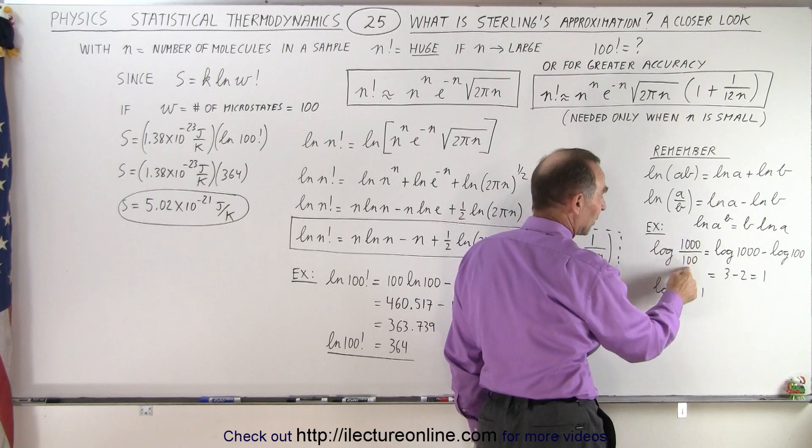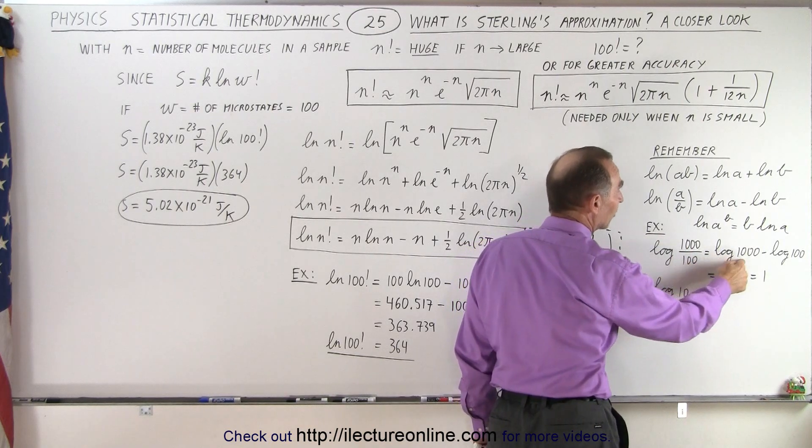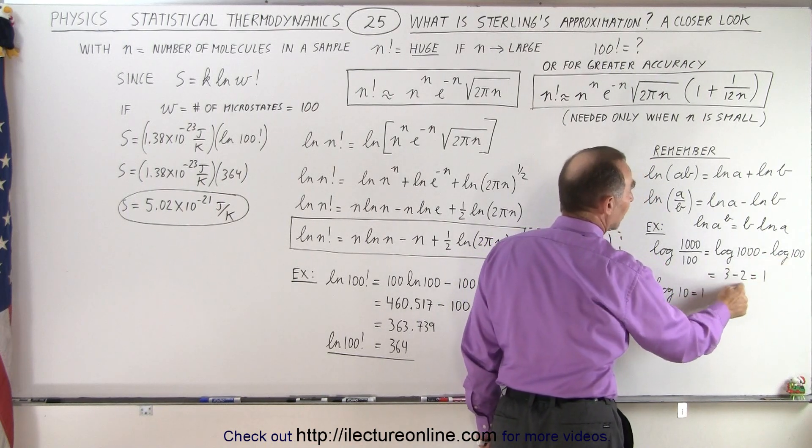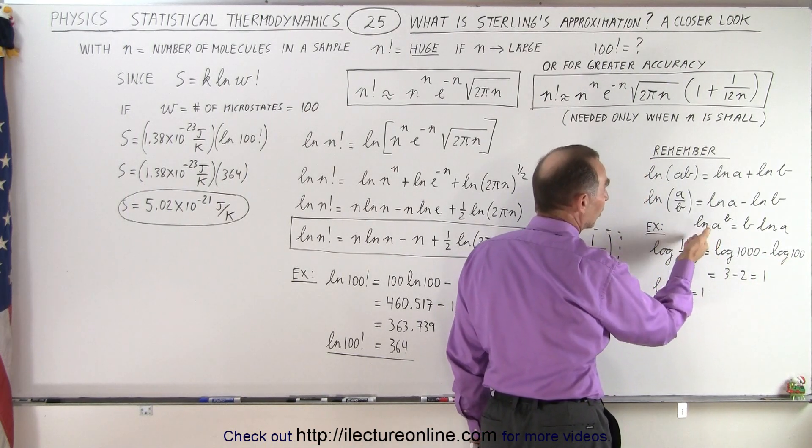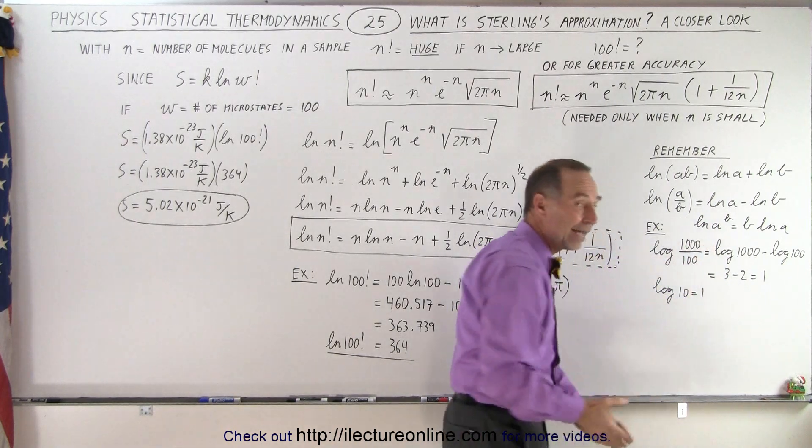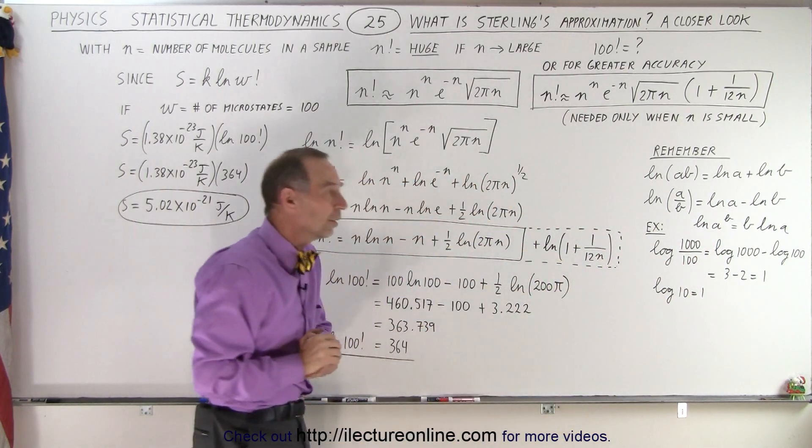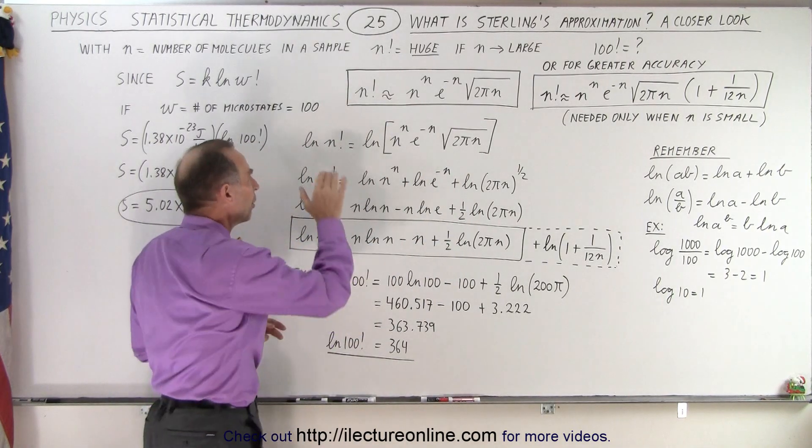The log of 1000 divided by 100 is equal to the log of 1000 minus the log of 100. The log of 1000 is 3, the log of 100 is 2. 3 minus 2 is 1, and of course 1000 divided by 100 is 10 and the log of 10 is also 1, so you can see it works quite nicely. So we need those rules when we do this.